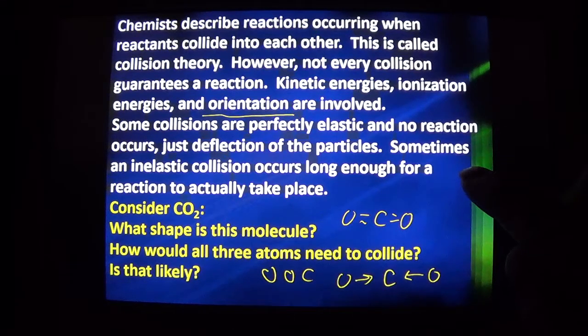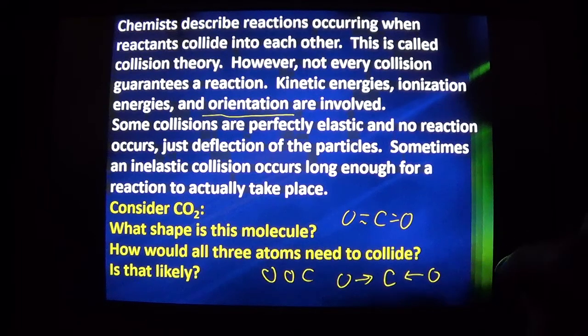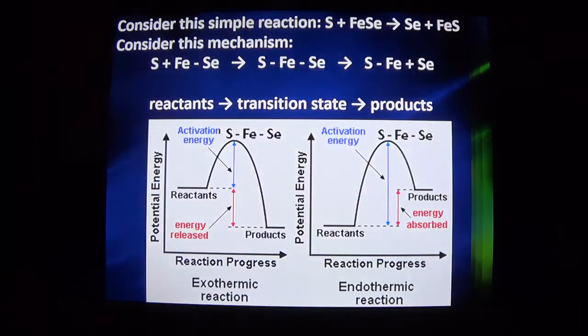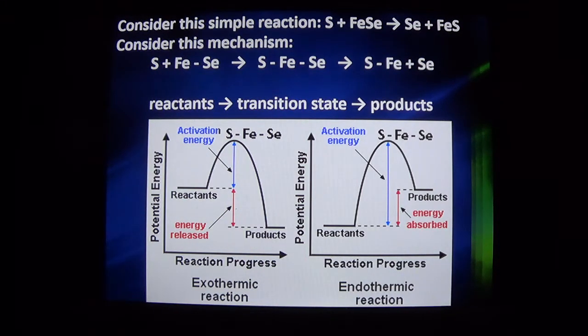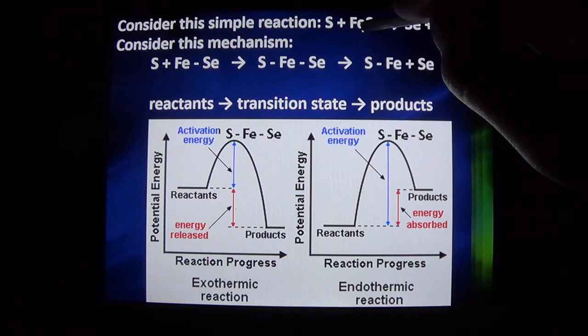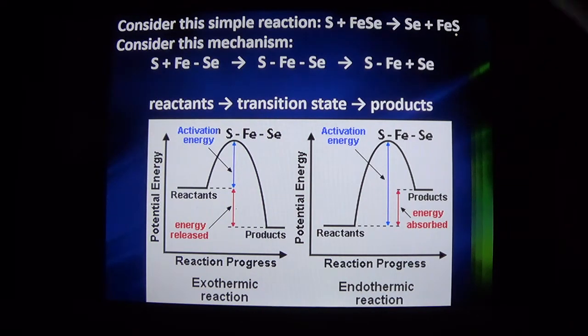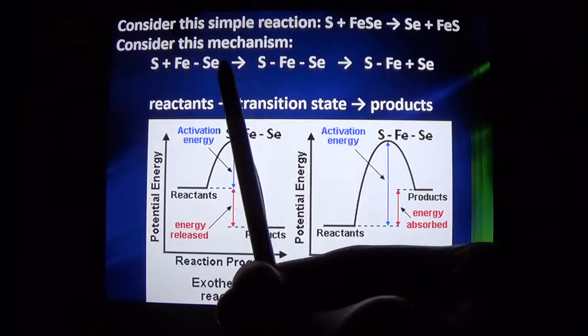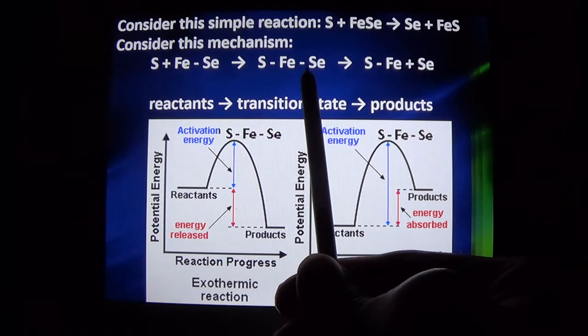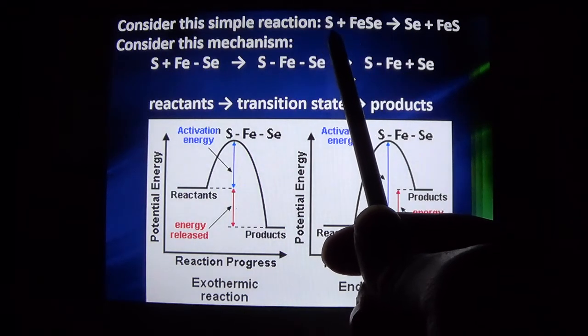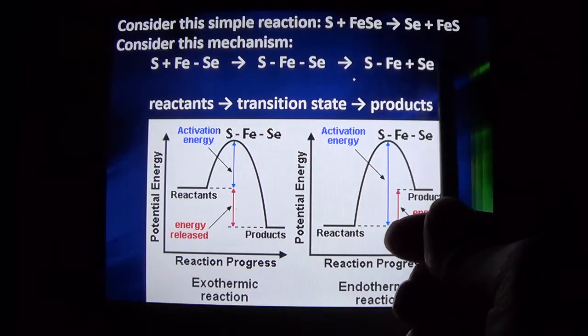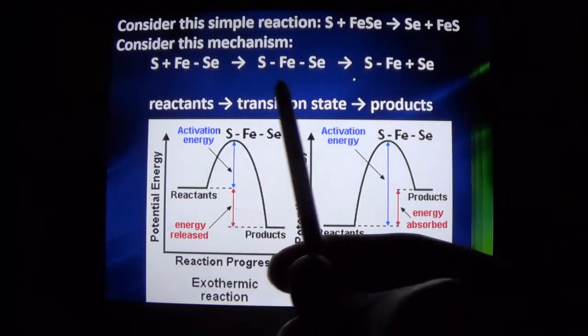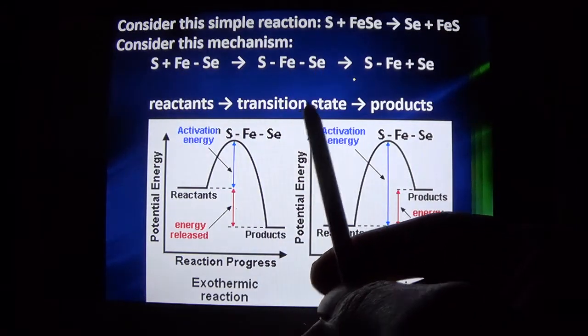We've already mentioned how a catalyst could help form an intermediate. This intermediate or transition state is what we get in between the reactants and the products. For this reaction where sulfur and iron selenide become selenium and iron sulfide, you can see how sulfur has to hit the iron side, form a bond there, break the bond with selenium. We have our reactants, our transition state, and then our products.